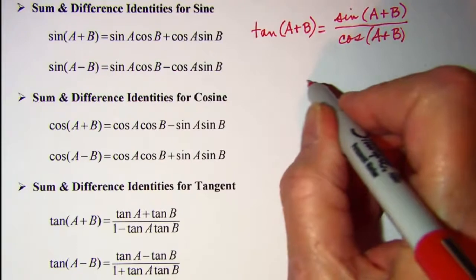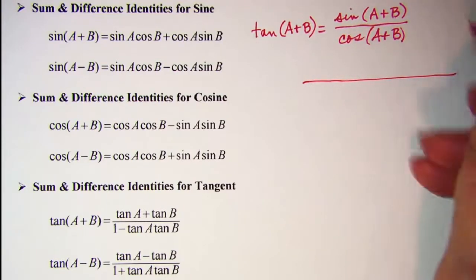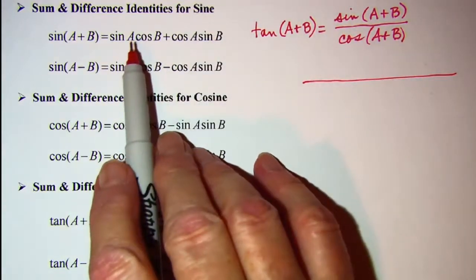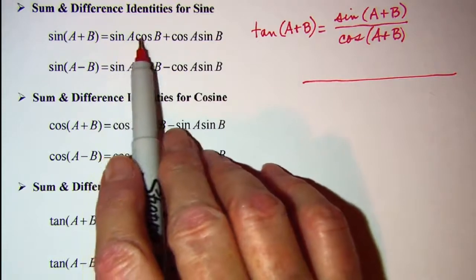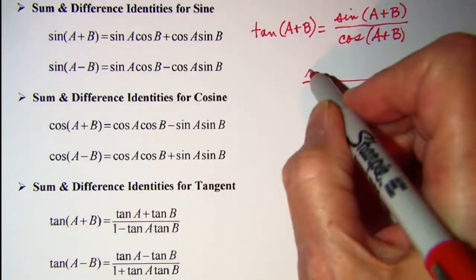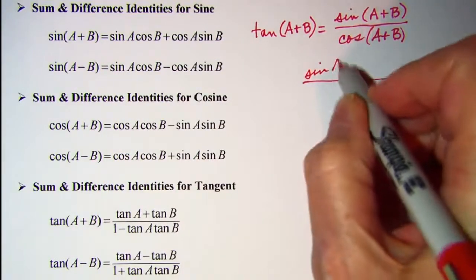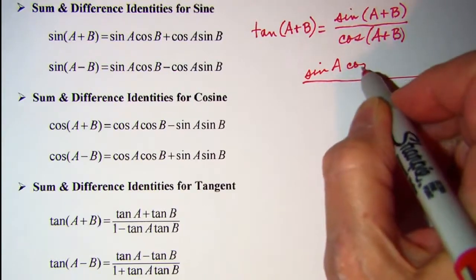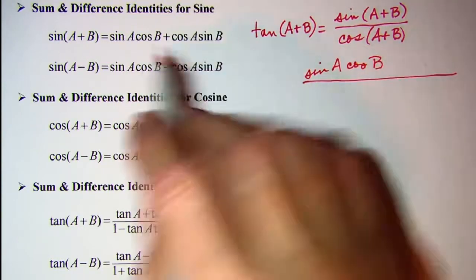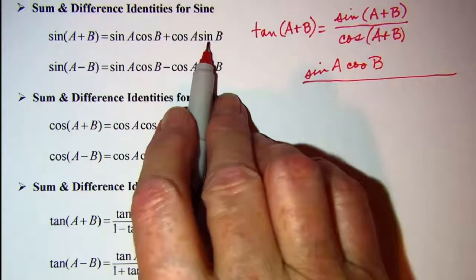So we can write our sine of A plus B in the numerator. That would be sine A cosine B plus cosine A sine B.